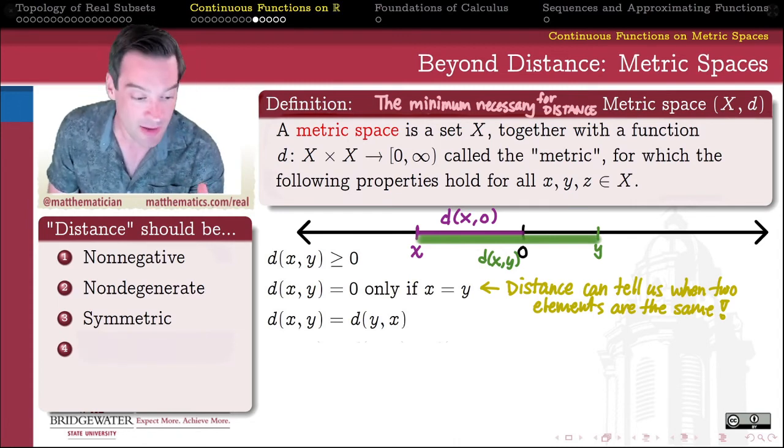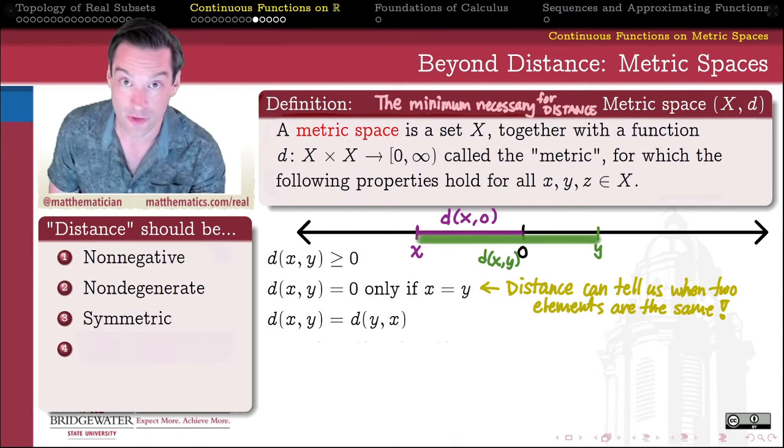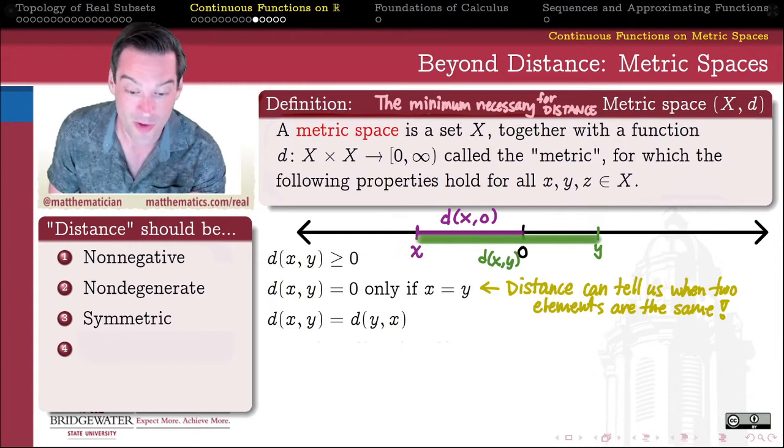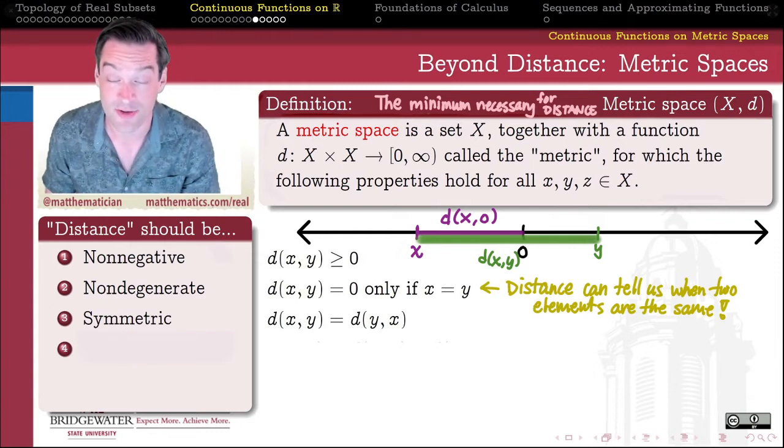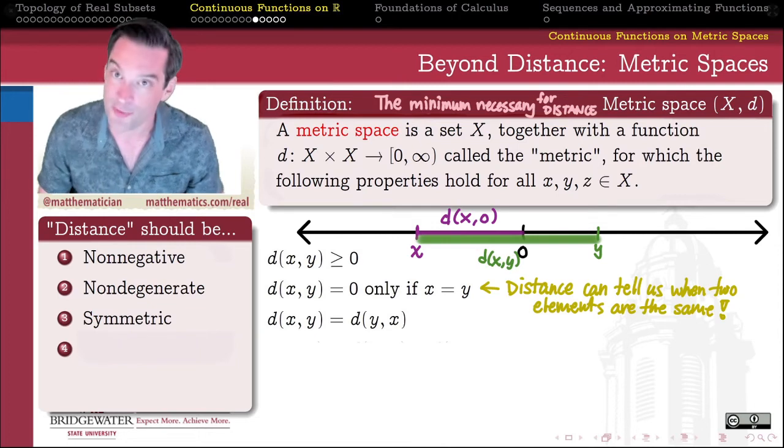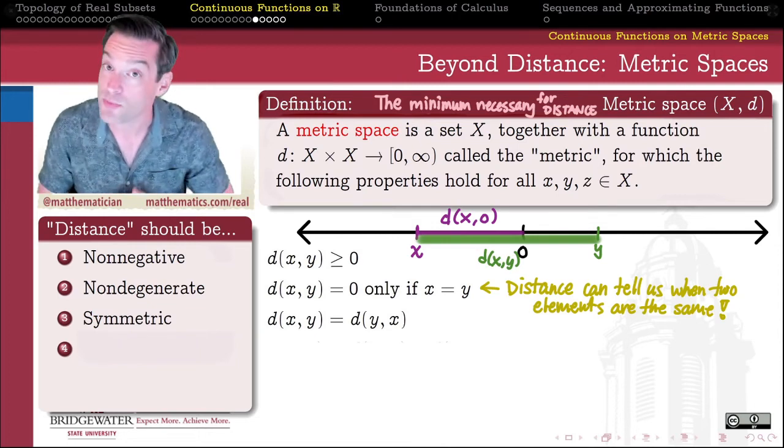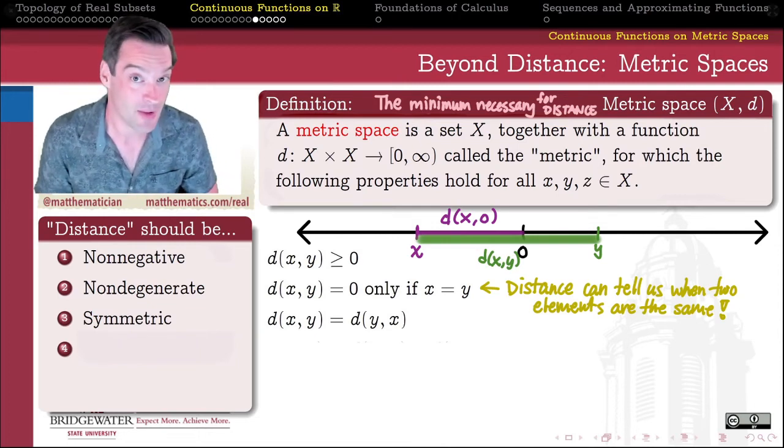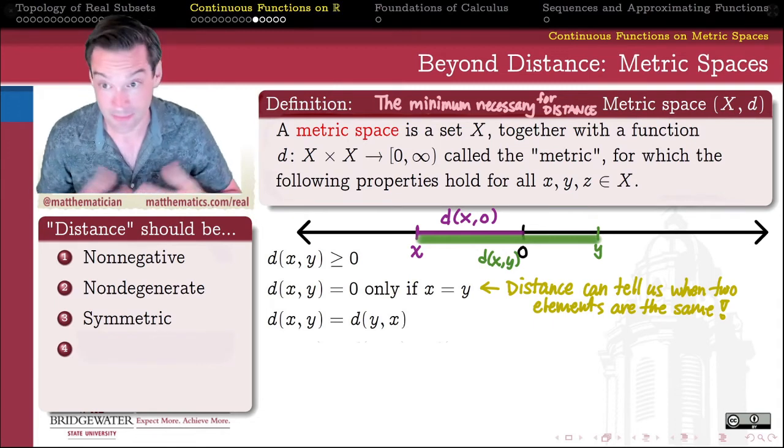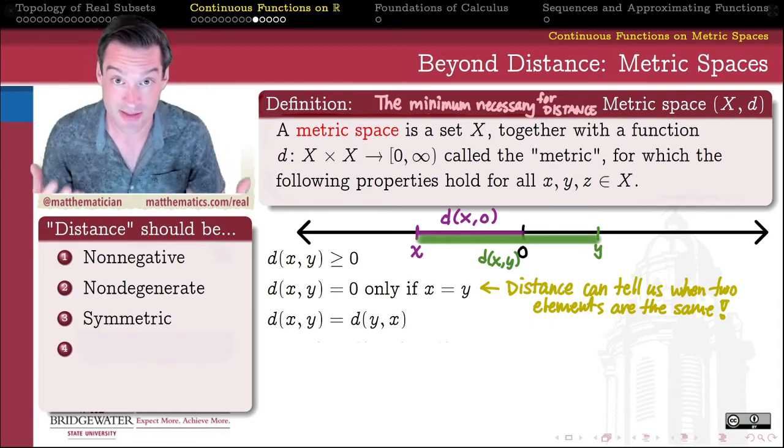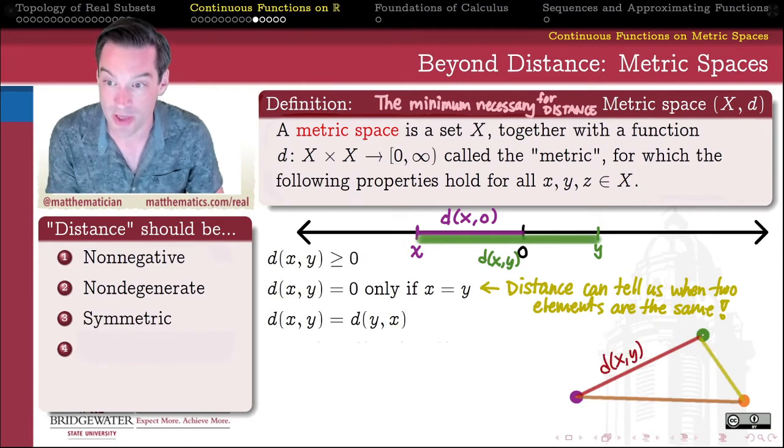And then comes the property that is probably the most valuable property for us. It's also the one that's not the most obvious when we think about what distance should satisfy. But it's a property that tells me that in a sense, the shortest distance between two points is a straight line. Well, straight line doesn't have any meaning in the general metric space on a set context. So let's say a little bit more specifically what I mean.